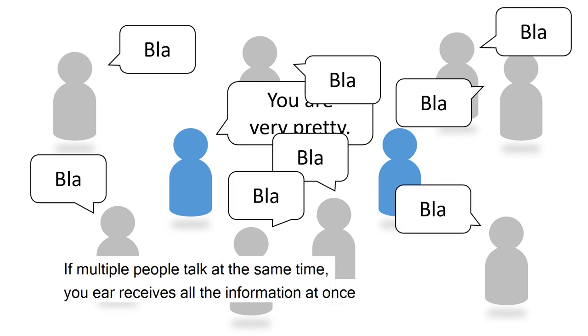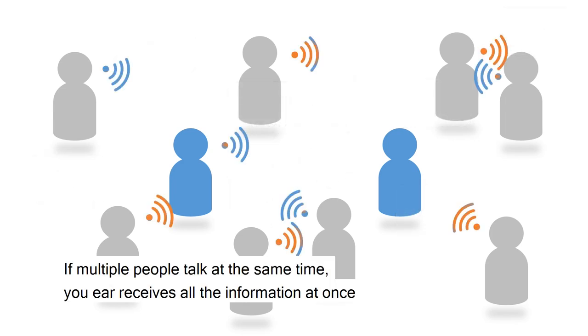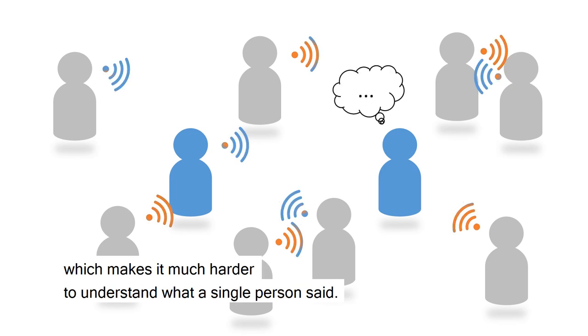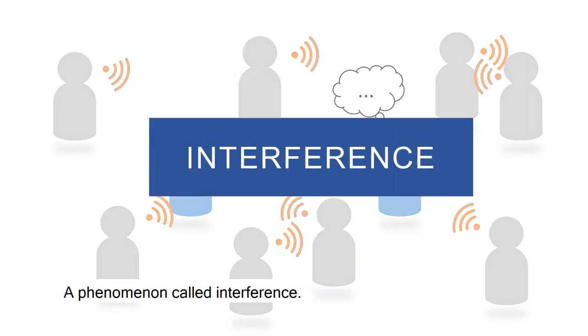If multiple people talk at the same time, you receive all the information at once, which makes it much harder to understand what a single person said. A phenomenon called interference.